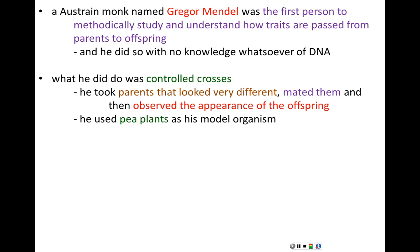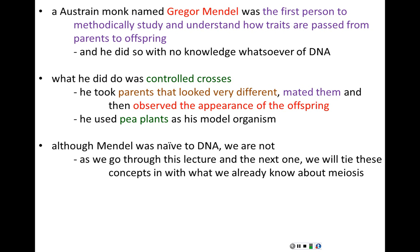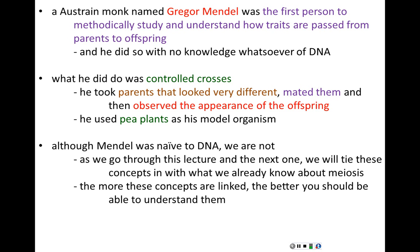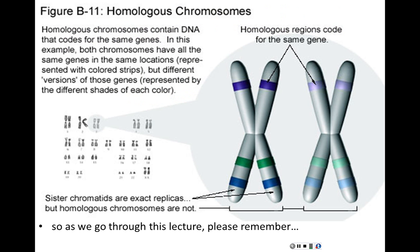Obviously you can't do this kind of work with human beings — it's unethical — so Mendel used pea plants as his model organism. Mendel was naive to DNA; we are not. So as I go through this lecture, I will try whenever possible to tie the concepts we're discussing in Mendelian genetics into what we already know about meiosis, mitosis, and DNA in general. The more concepts are linked in your mind, the better you should be able to understand and recall them. We're not going to treat material this semester like independent discrete units of knowledge — we're going to understand it in a large, cohesive picture.